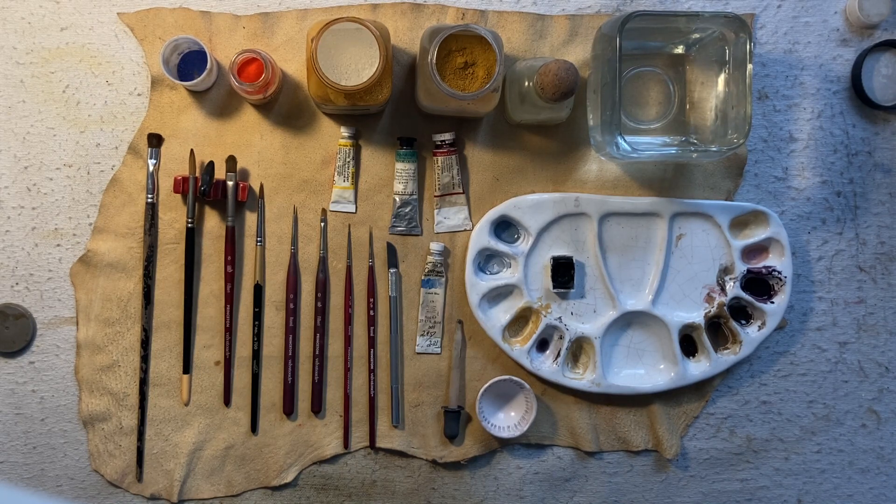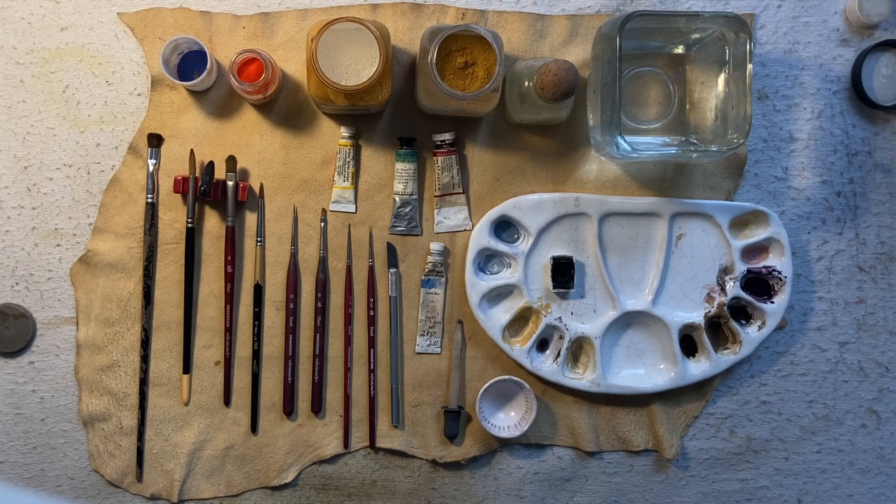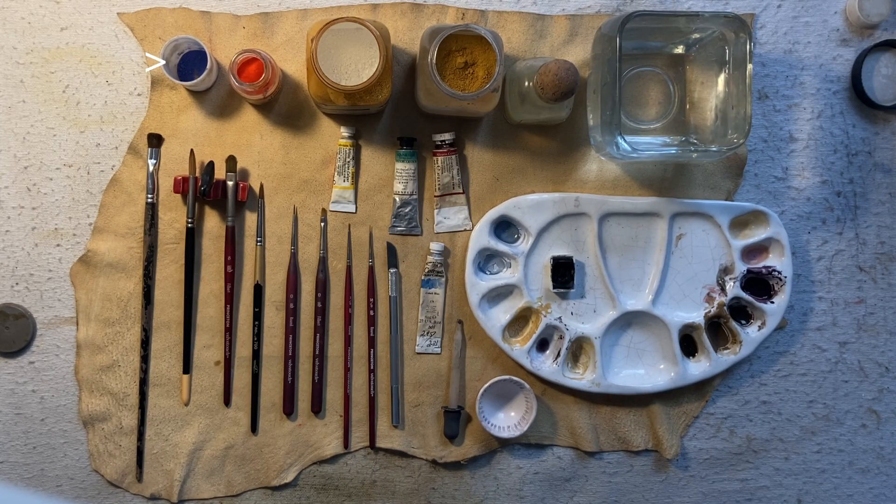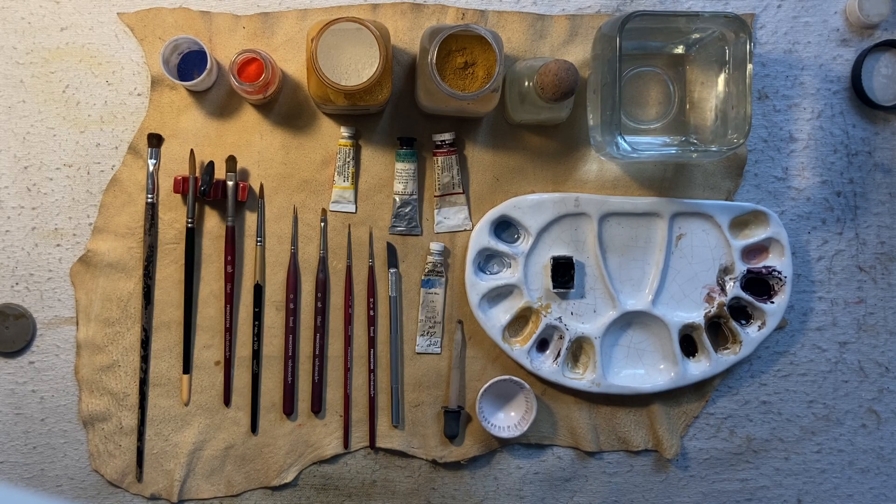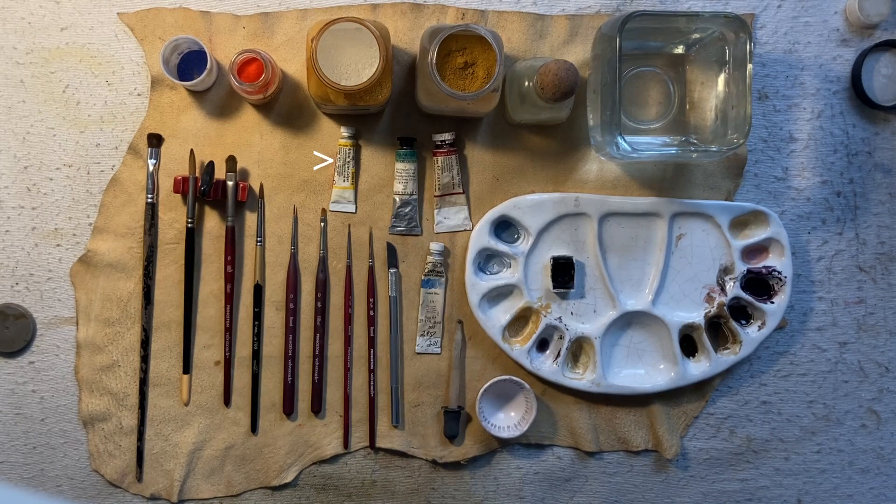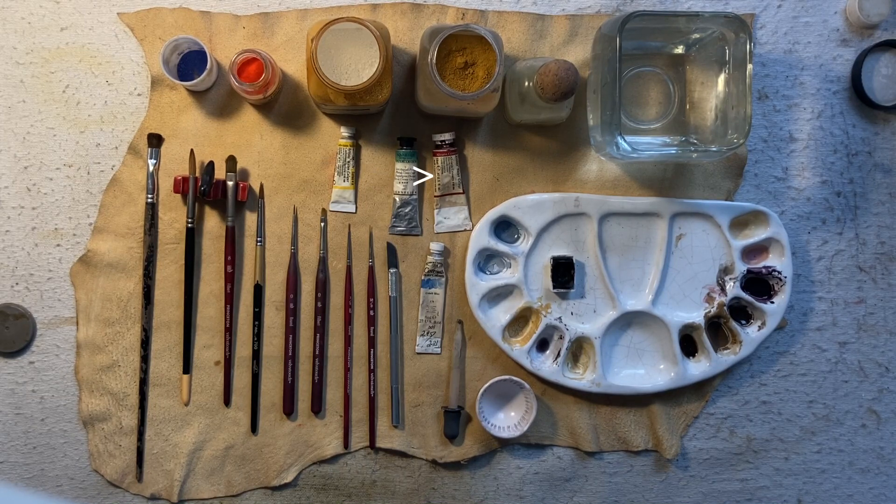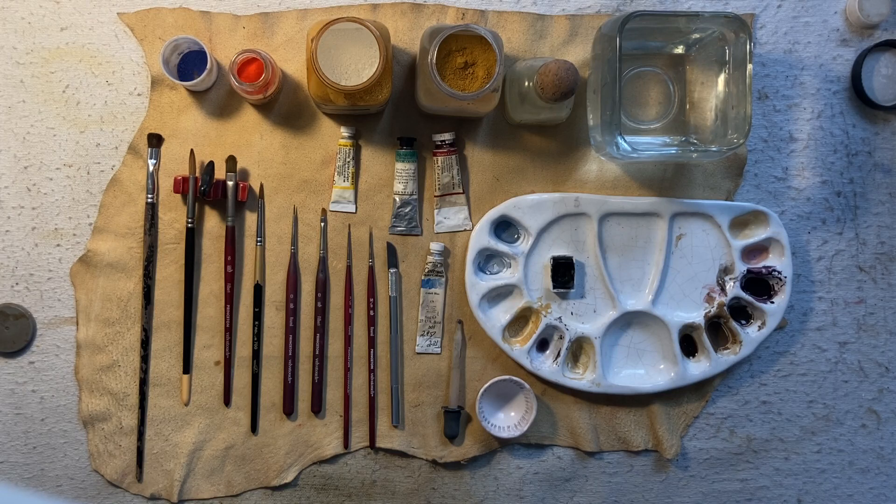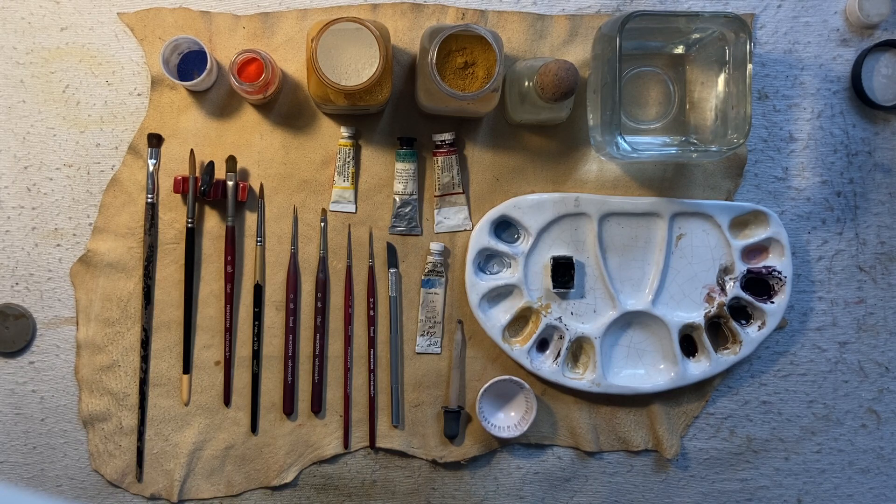We start this lesson with a flat lay showing all necessary tools and materials. We see the main pigments such as Lapis Lazuli, French Vermilion, Titanium White, Yellow Ochre, and watercolors including Cadmium Yellow, Phthalo Green Deep, Alizarin Crimson, Cobalt Blue, and Ivory Black. Of course, you can use your own kit if it's close to our color palette.